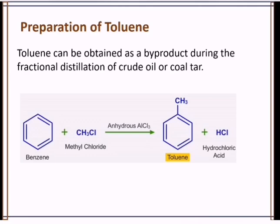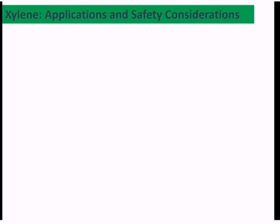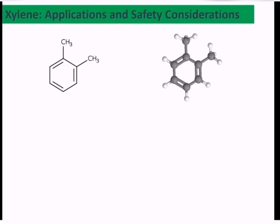Now let's look at xylene. Xylene is also called dimethylbenzene, while toluene is also called methylbenzene. Xylene has two methyl groups substituted on the benzene ring. There are three isomers of xylene: the first one is ortho-xylene, the second one is meta-xylene, and the last one is para-xylene.